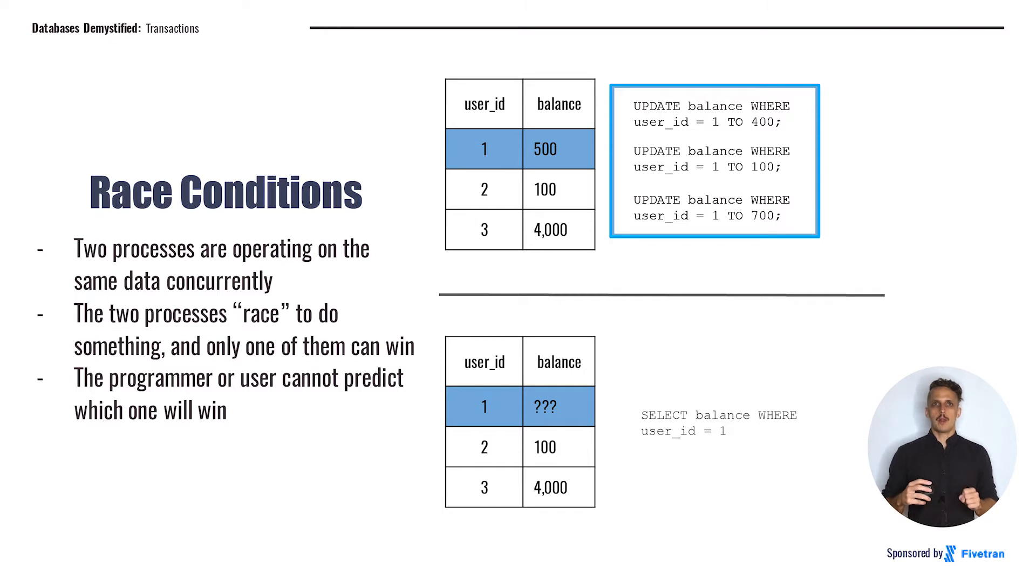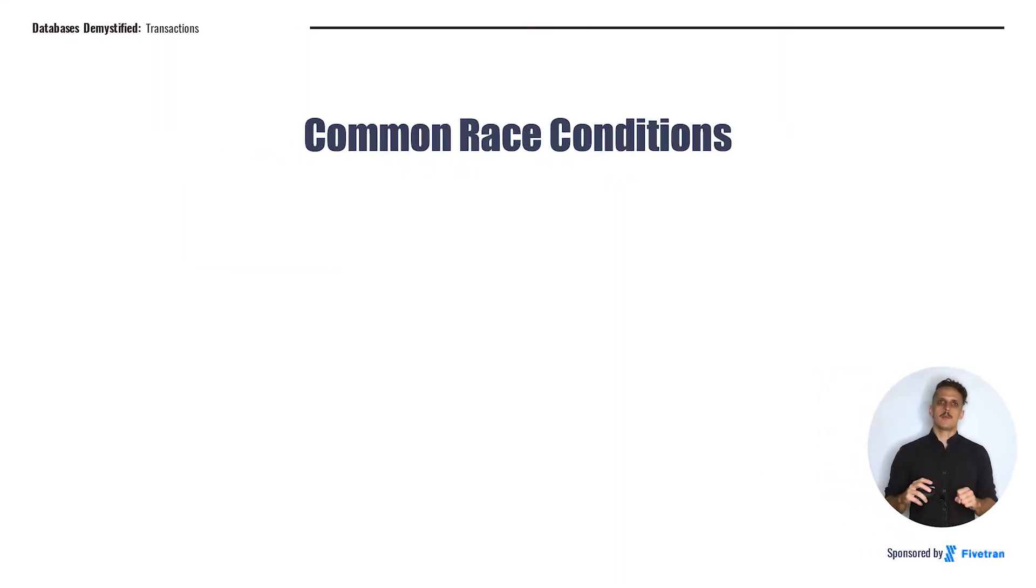This can end up being a real problem for us. We want to make sure that our databases are robust to race conditions so that we don't introduce bugs into our application because we can't be sure which values will be saved in the database. There are three really common race conditions that people talk about a lot, especially in the context of databases. You don't really need to know in super precise detail what each of these different types of race conditions are, but it is important that you know what race conditions are in general and that you get a sense for what the different types of issues the database might encounter.